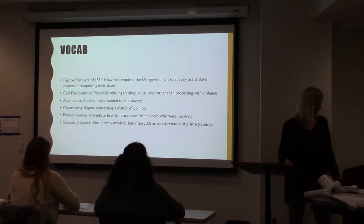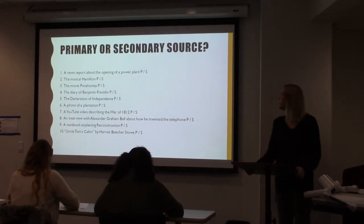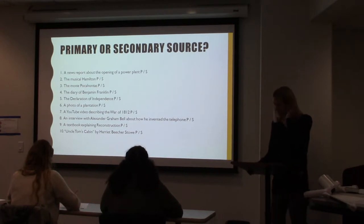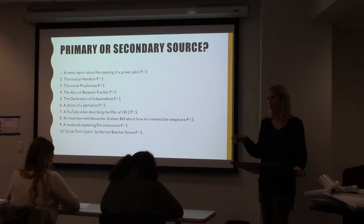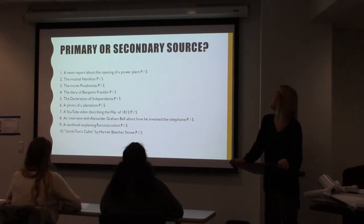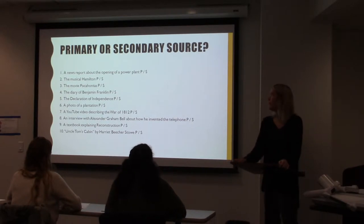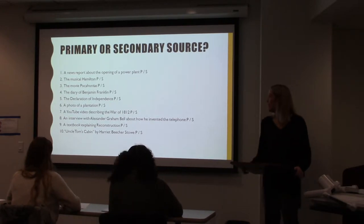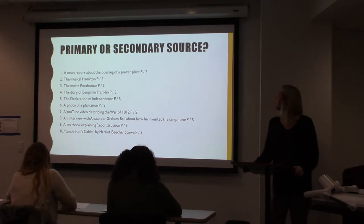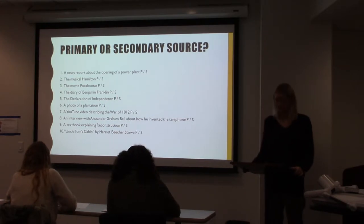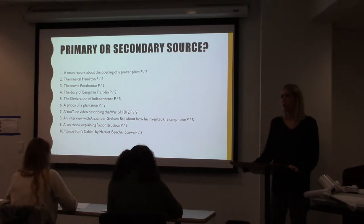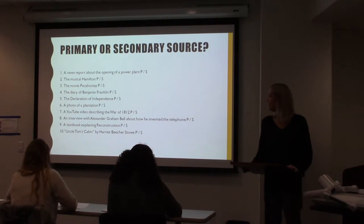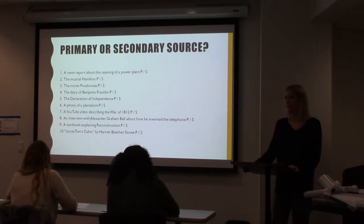So next we're going to review some of these vocab words — primary and secondary sources. I'm going to read these off, go down the line, and you're going to answer whether you think it's primary or secondary. Starting with Alex: a news report about the opening of a power plant — Primary. Good. Taylor: the musical Hamilton — Secondary. Kyle: the diary of Benjamin Franklin — Primary. Brielle: the Declaration of Independence — Primary. Emily: a photo of a plantation — Primary. A YouTube video describing the war — Secondary. Very good. An interview with Alexander Graham Bell about how he invented the telephone — Primary. And then a textbook explaining Reconstruction — Secondary.